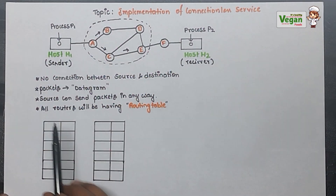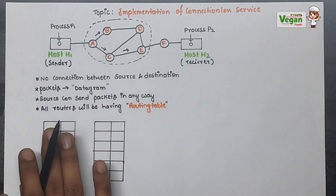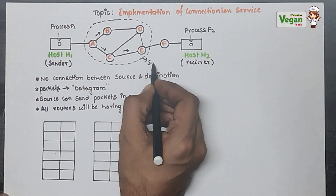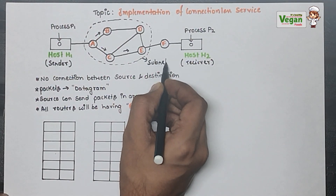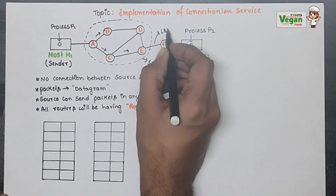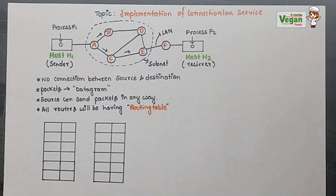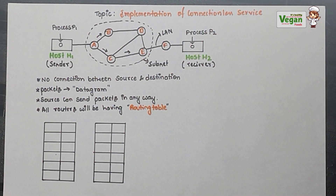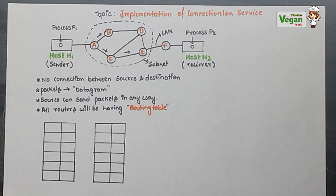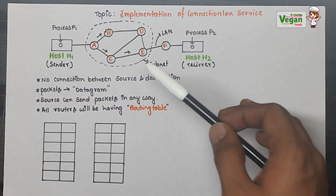In this implementation of connectionless service, there is no direct connection between the receiver and the sender. There will be a subnet, and each of the routers will be connected using a LAN — local area network. This subnet can be used as the ISP, that is, the internet service provider.